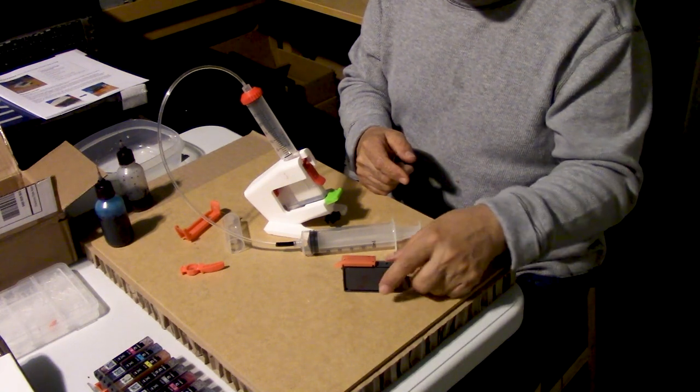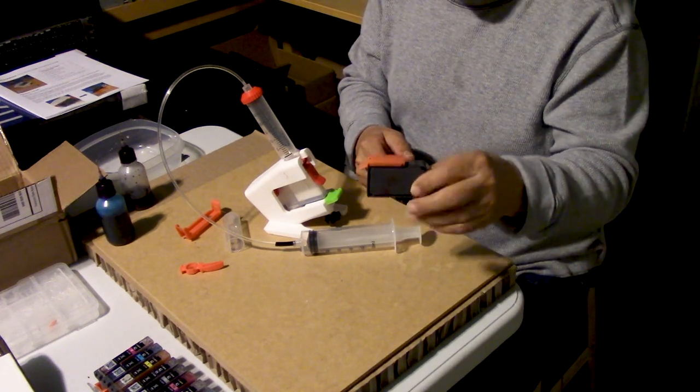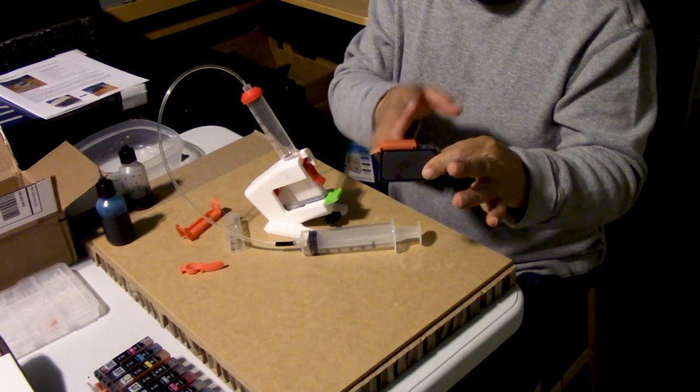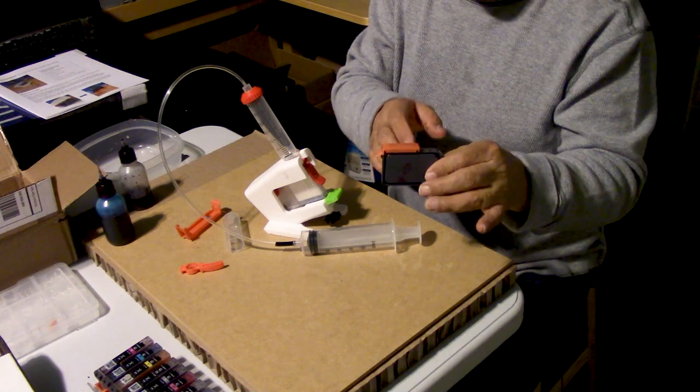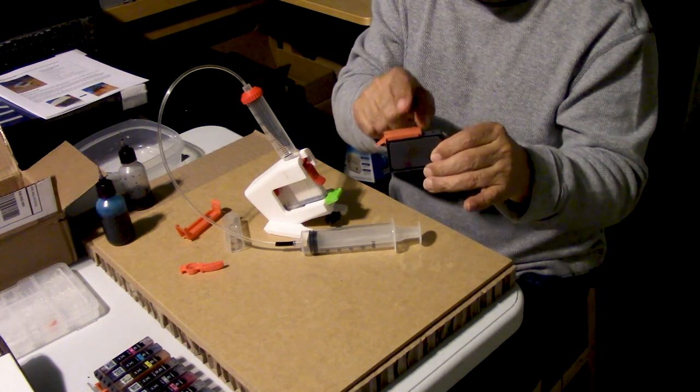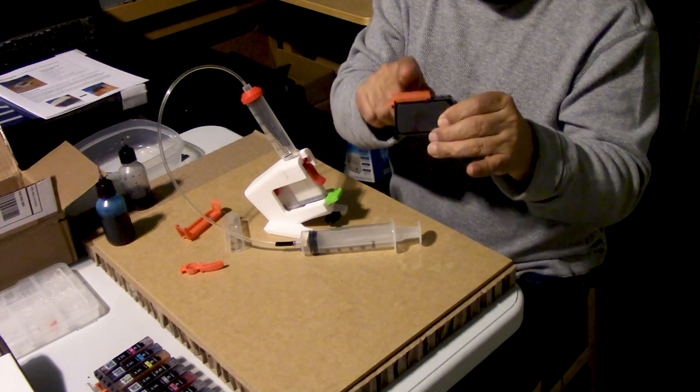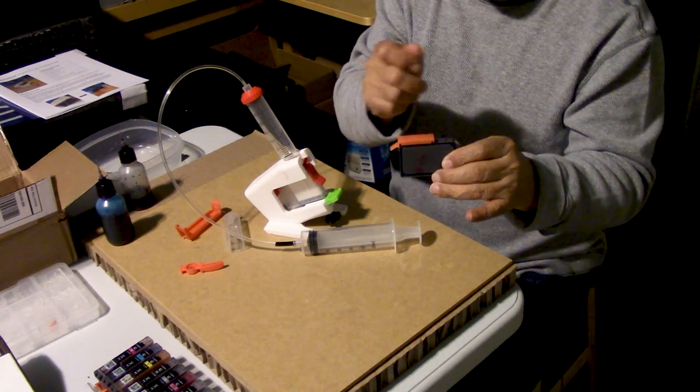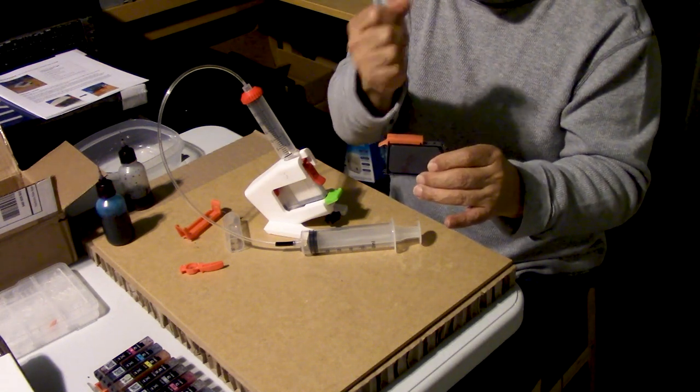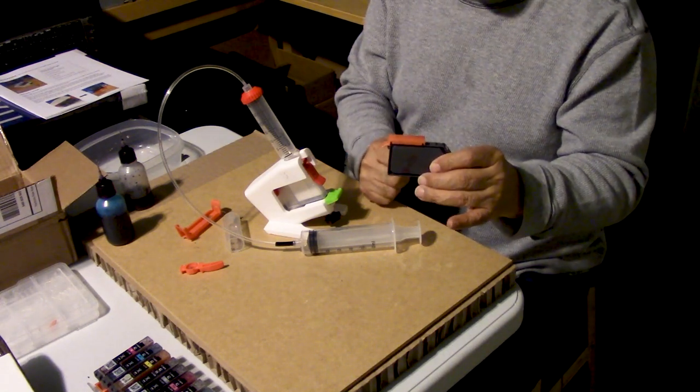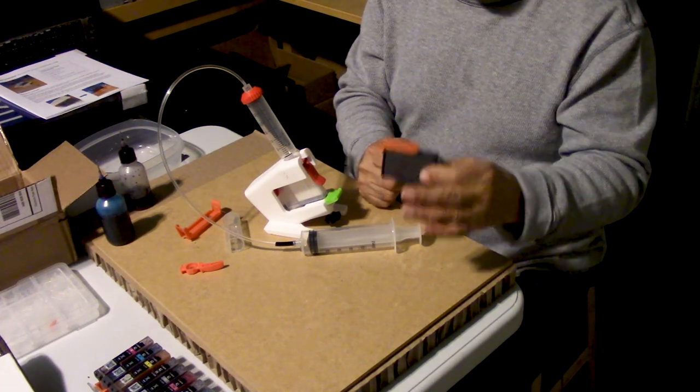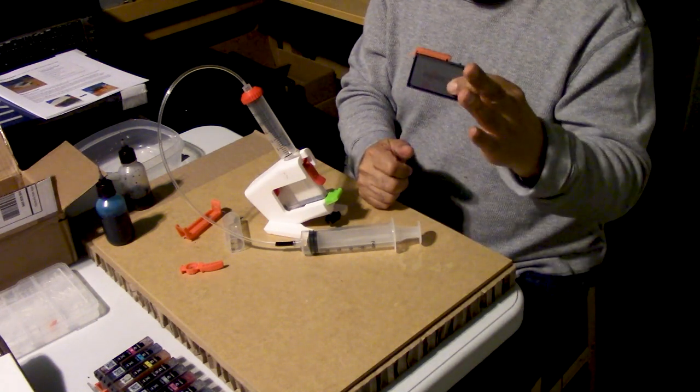Now he's also going to be creating a refilling method for these. Now these can actually be refilled not necessarily by vacuum, because you cannot really create a vacuum with these cartridges, but you can sure collapse that bag. So it'll be an adapter with a luer lock system on it. You pop the adapter on it and then you attach a syringe with the proper amount of ink. You pull back to collapse the bag and then inject the ink.